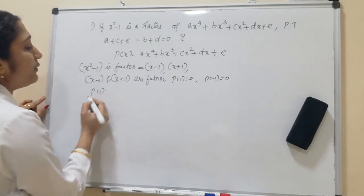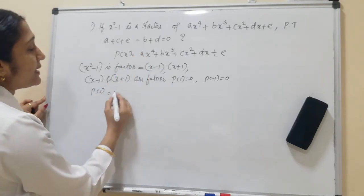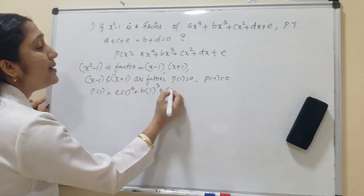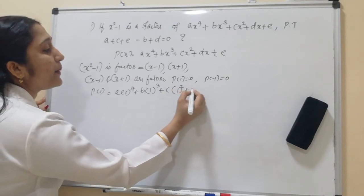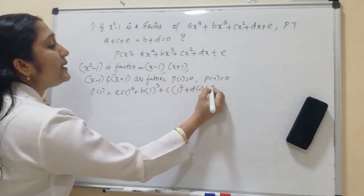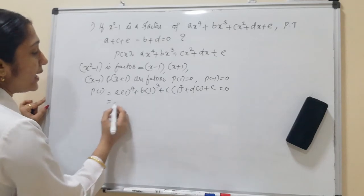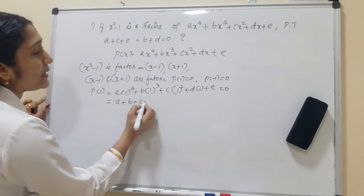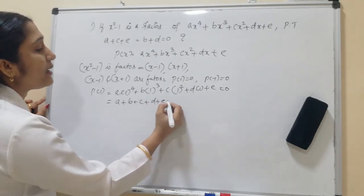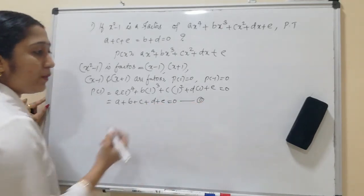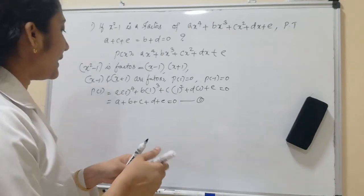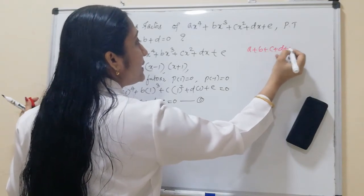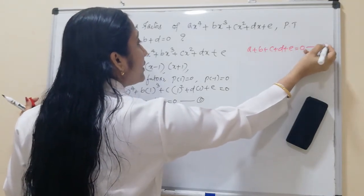p(1) = a(1)⁴ + b(1)³ + c(1)² + d(1) + e = 0. That gives us a + b + c + d + e = 0, which is Equation 1.